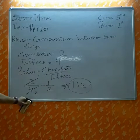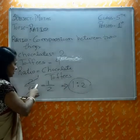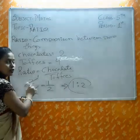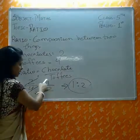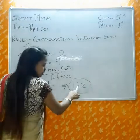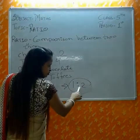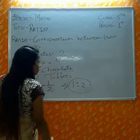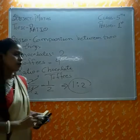In short, we divide every number. We have to mention this in the simplest way: 1 is to 2. So this is the ratio between chocolates and toffees. Is that clear?